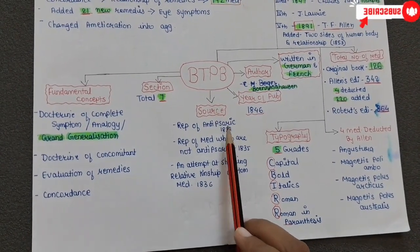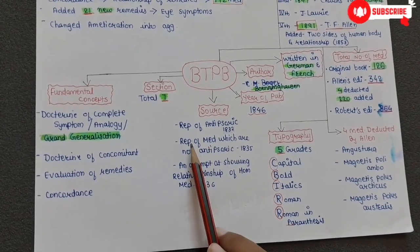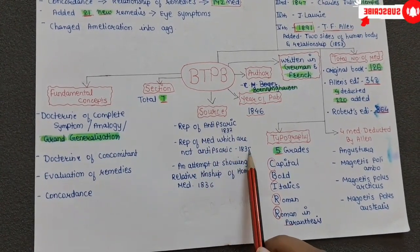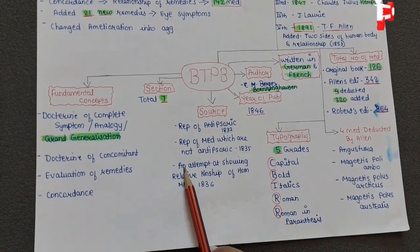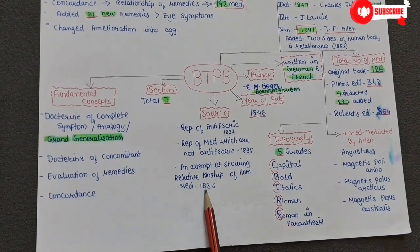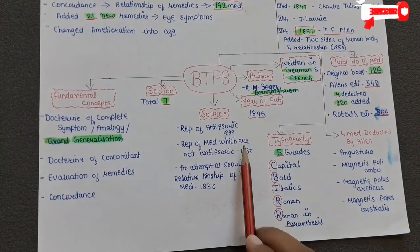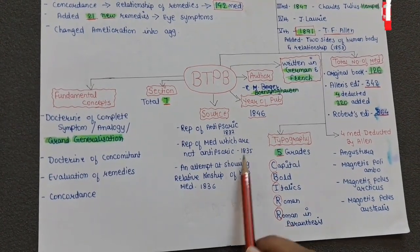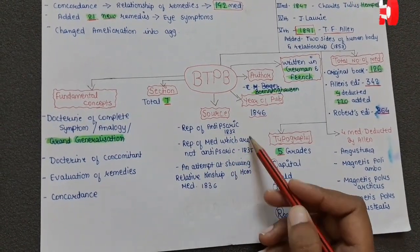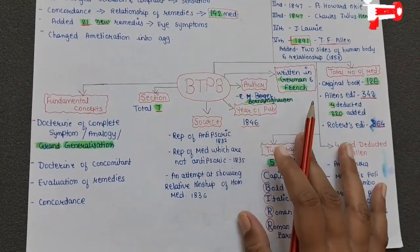The answer for the preface of the Antipsoric Repertory is Hahnemann. Then the Repertory of Medicines Which Are Not Antipsoric was written in 1835, and An Attempt at Showing the Relative Kinship of Homeopathic Medicines in 1836. So 1832, 1835, 1836 — all three books combined make up BTPB. There are three sources.